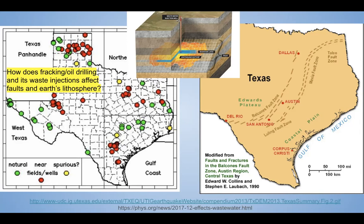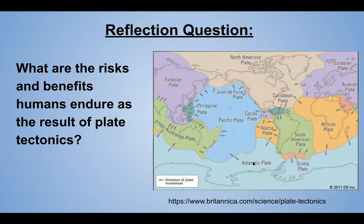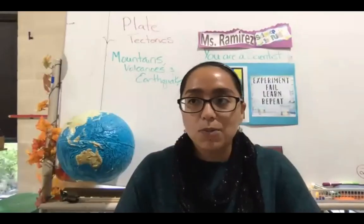Think about how fracking and oil drilling and waste injections affect faults and the earth's lithosphere. According to the U.S. Geological Society, fracking itself does not directly cause the quakes, but the disposal of waste products from fracking — injecting that waste thousands of feet into the ground — is what they think may be causing these small minor quakes. That's something for you to research. Before we go, think about: what are the risks and benefits humans endure as a result of plate tectonics? Can you think of any positive effects?